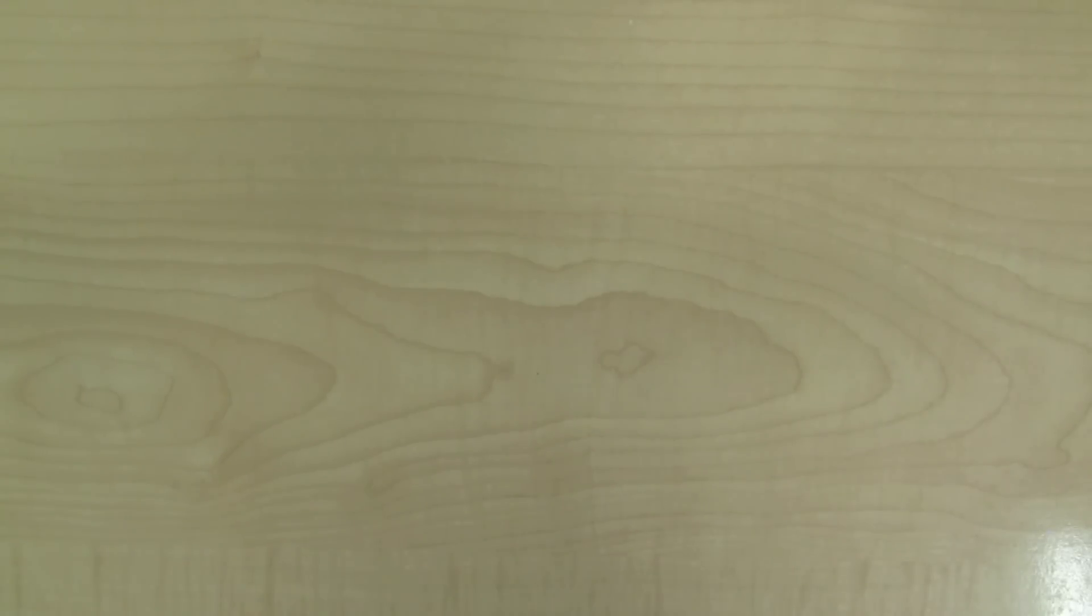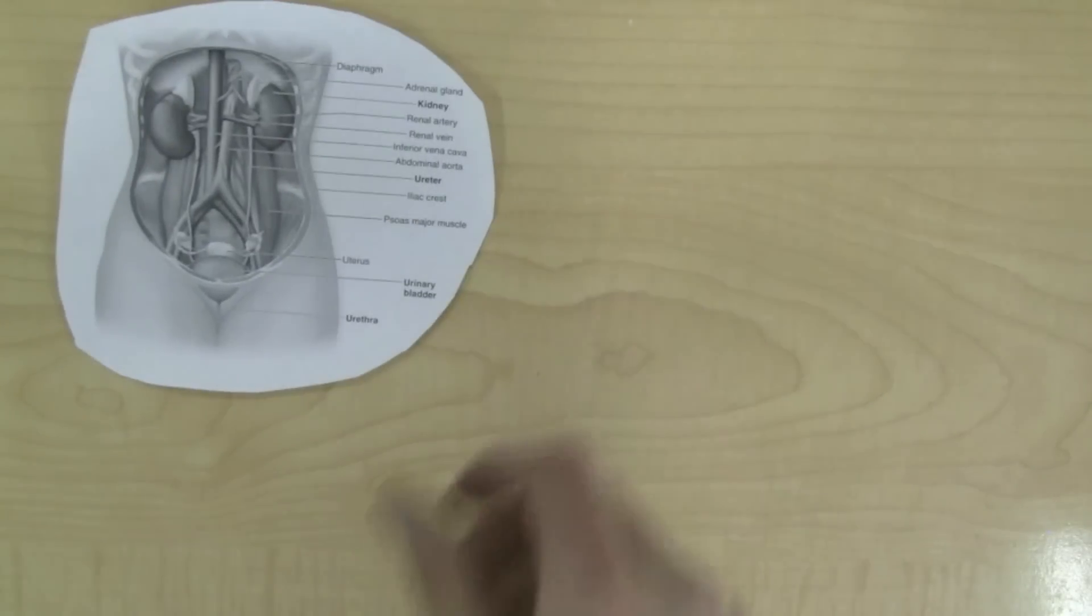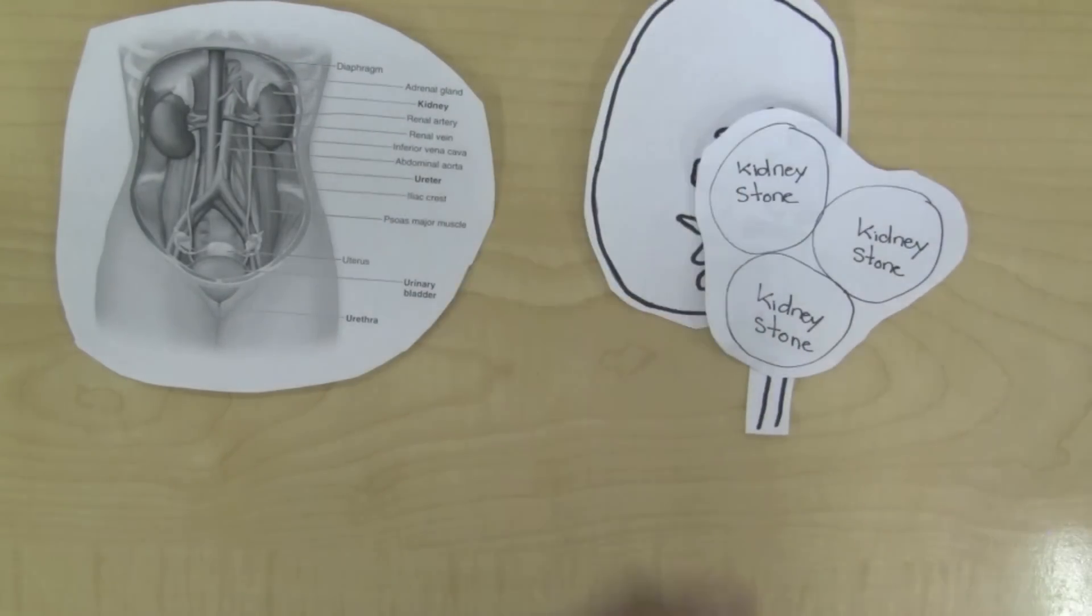Some possible diseases that can affect our excretory system include kidney stones, urethritis, and urinary tract infection. There are many more.